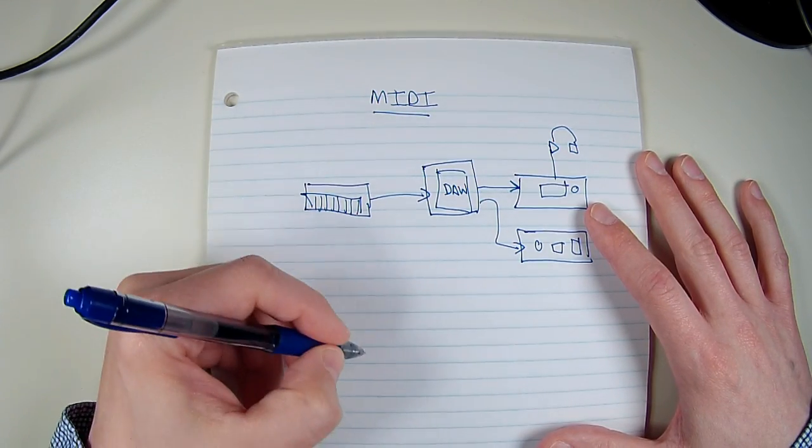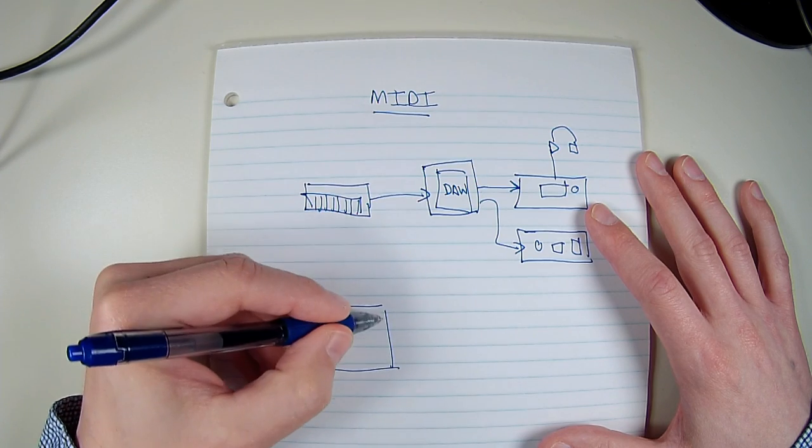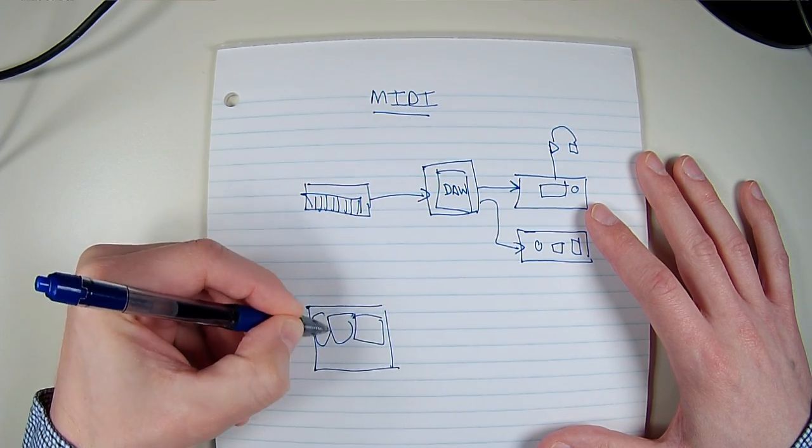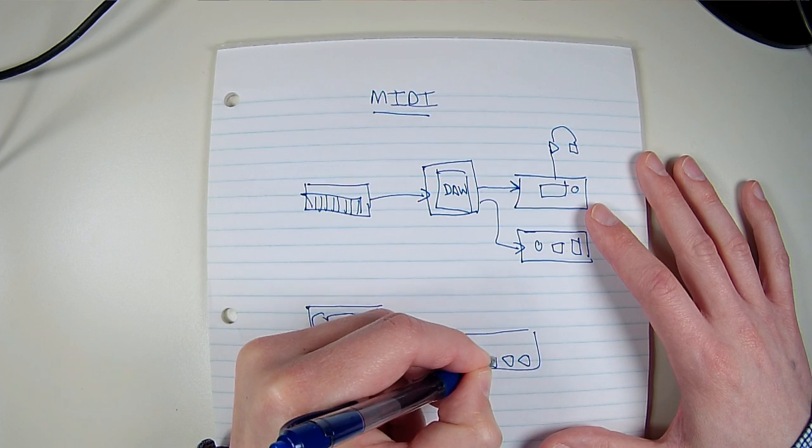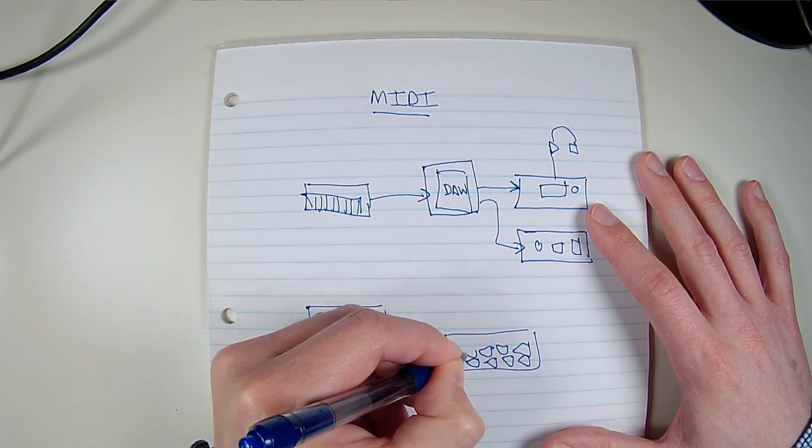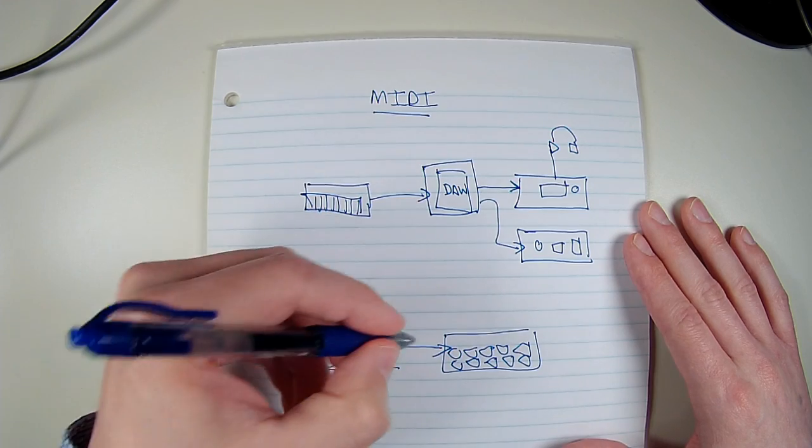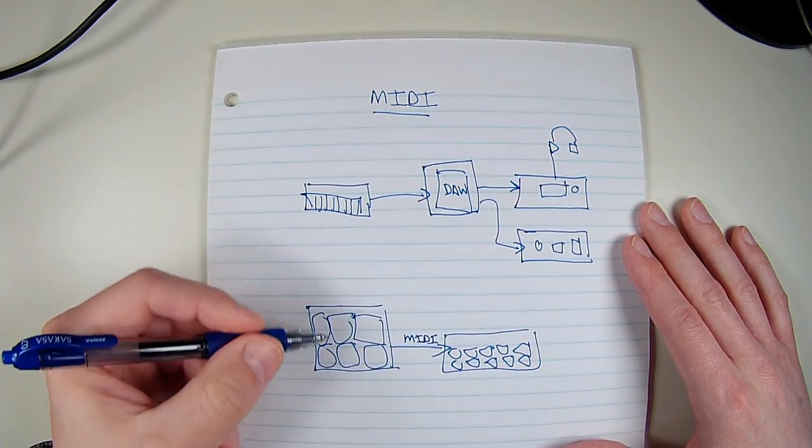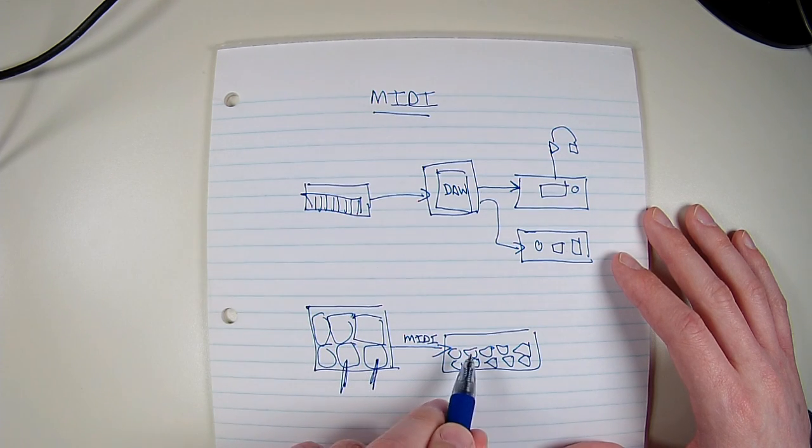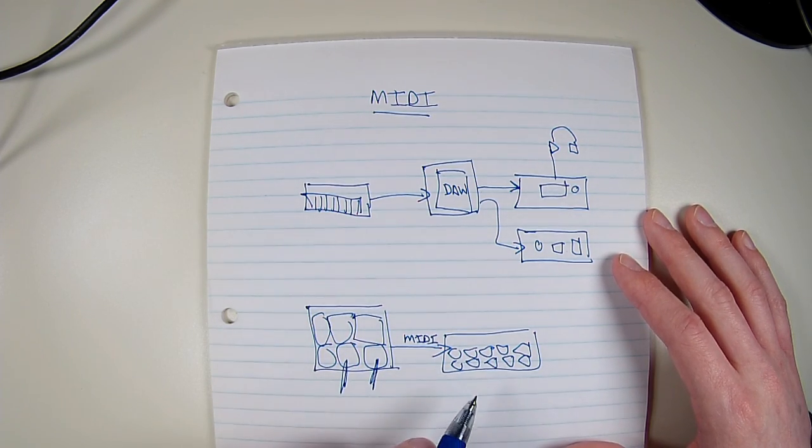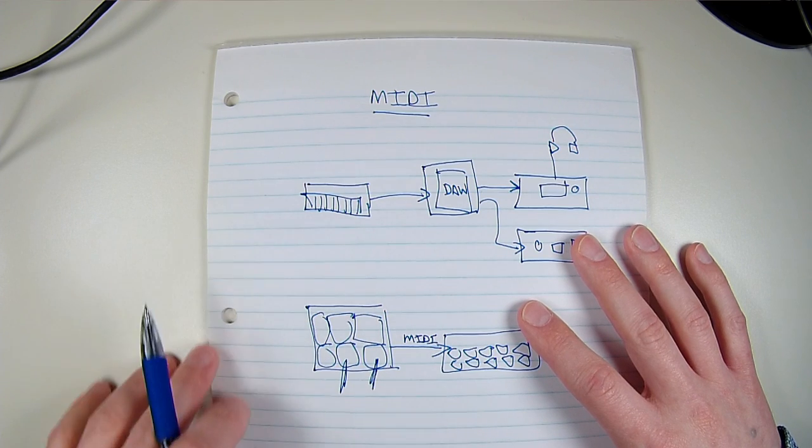Another example would be, let's say, once again we've got our controller. This time the controller is like a drum pad. And over here we've got a drum machine, and we want to play the drum machine sounds directly from our drum pad, because maybe we're performing. There's no computer involved in this case. In this case let's call this a MIDI cable, because this is most likely what it would be. So we've got our drum pad here, we're playing it with drumsticks, and MIDI signals are being sent over here, and our drum machine is playing back its sampled sounds or something like that. So these are typical examples of how we might use MIDI in a real situation.